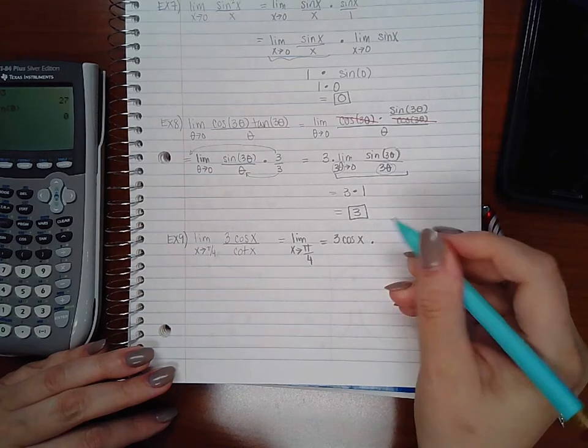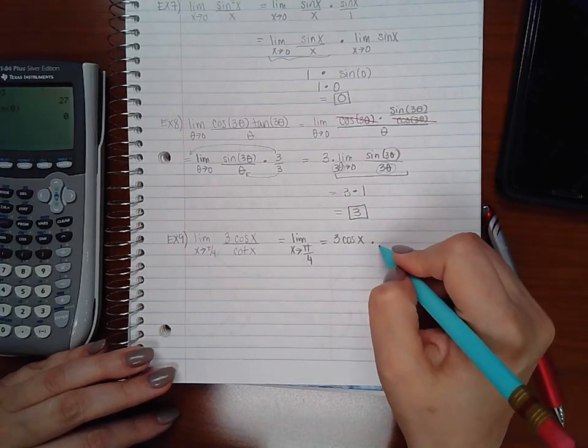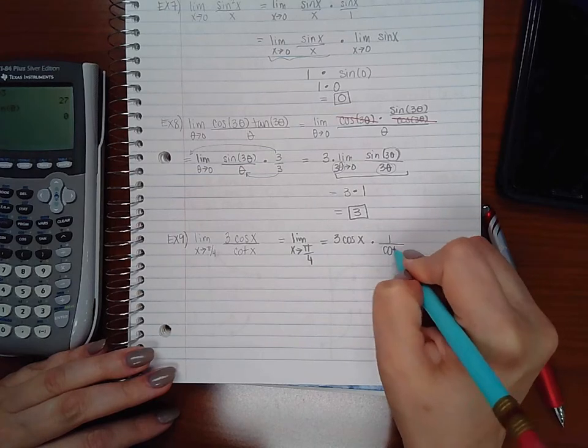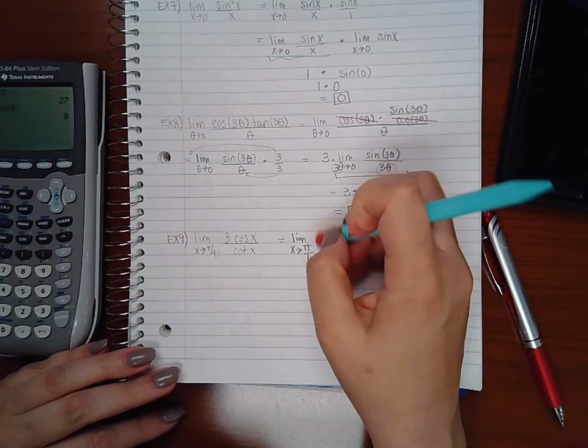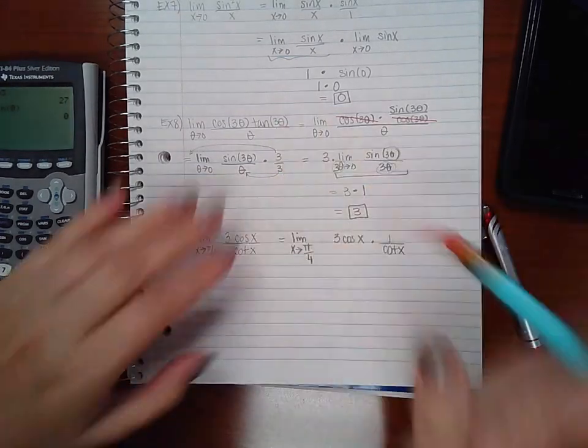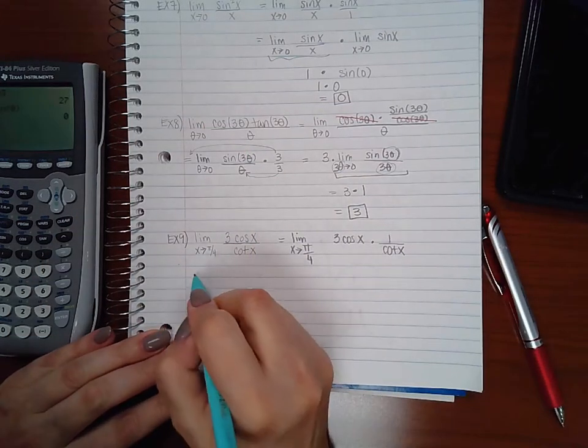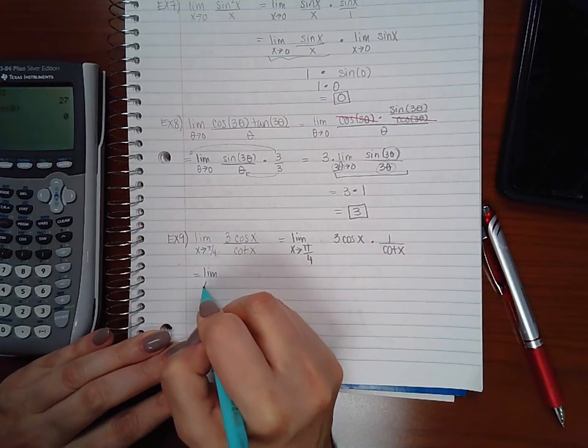Instead of cotangent in the denominator, I don't know why I put an equal sign there, we can put tangent in the numerator. So 3 cosine x times tangent x.